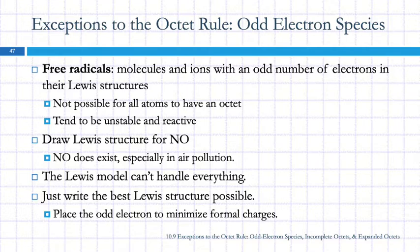If we have an odd number of electrons, there is no way you can draw a Lewis structure where everyone has eight. So, impossible. These are called free radicals. They have an odd number of electrons. They tend to be unstable and very reactive.